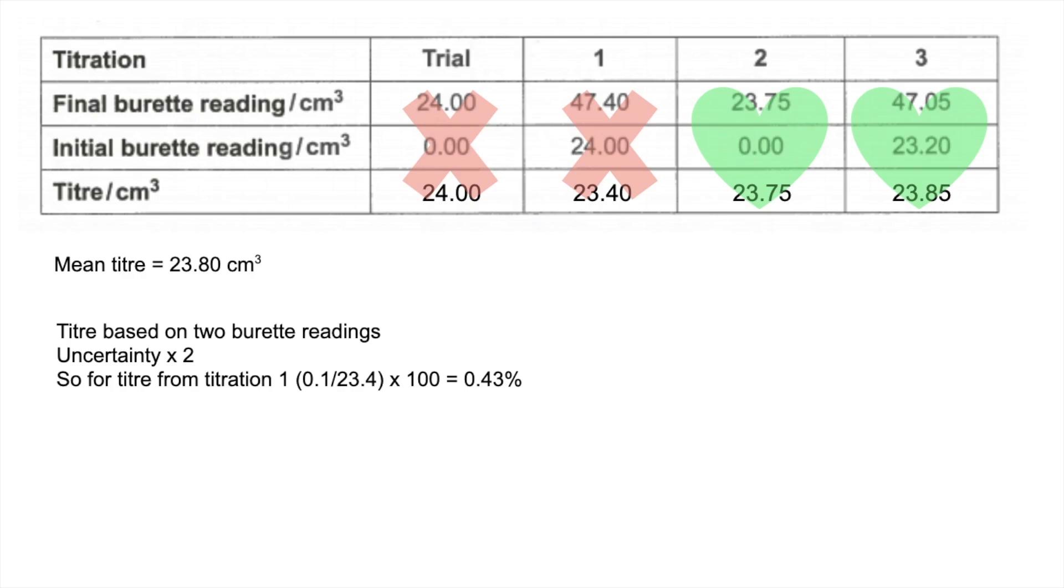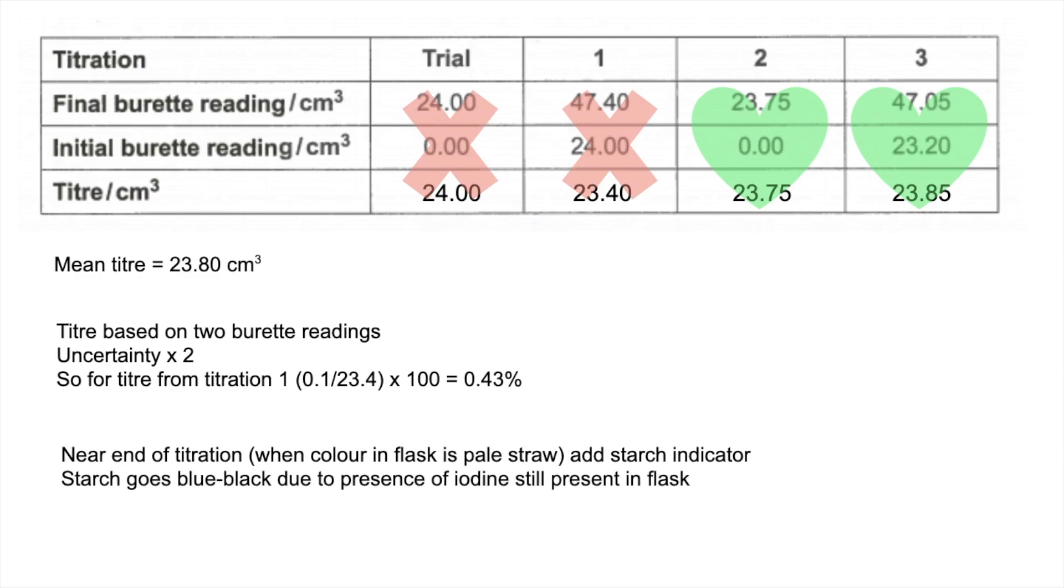So the next part, how do you determine the end point accurately? So near the end of the titration, the colour's a sort of pale straw colour, you add starch indicator. That's going to pick up any small amount of iodine still in the flask, and it goes blue-black. So when all the iodine's gone, at the end point, the indicator goes from blue-black to colourless.